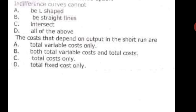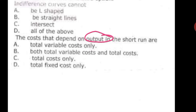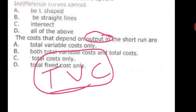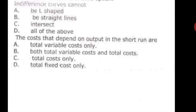The next question is: costs that depend on output in the short run are called — total variable cost, both total variable cost and total cost, total cost only, or total fixed cost. The costs that depend on output in the short run are always total variable costs. Fixed costs do not depend on output in the short run. So the correct option is total variable cost.